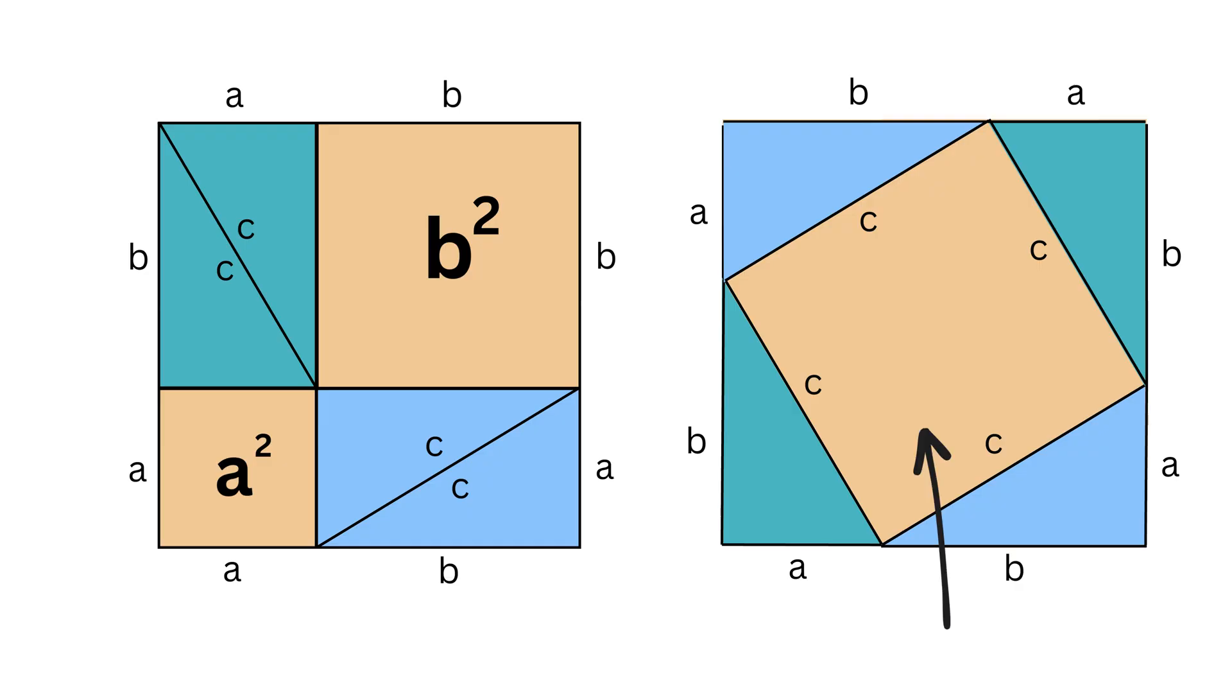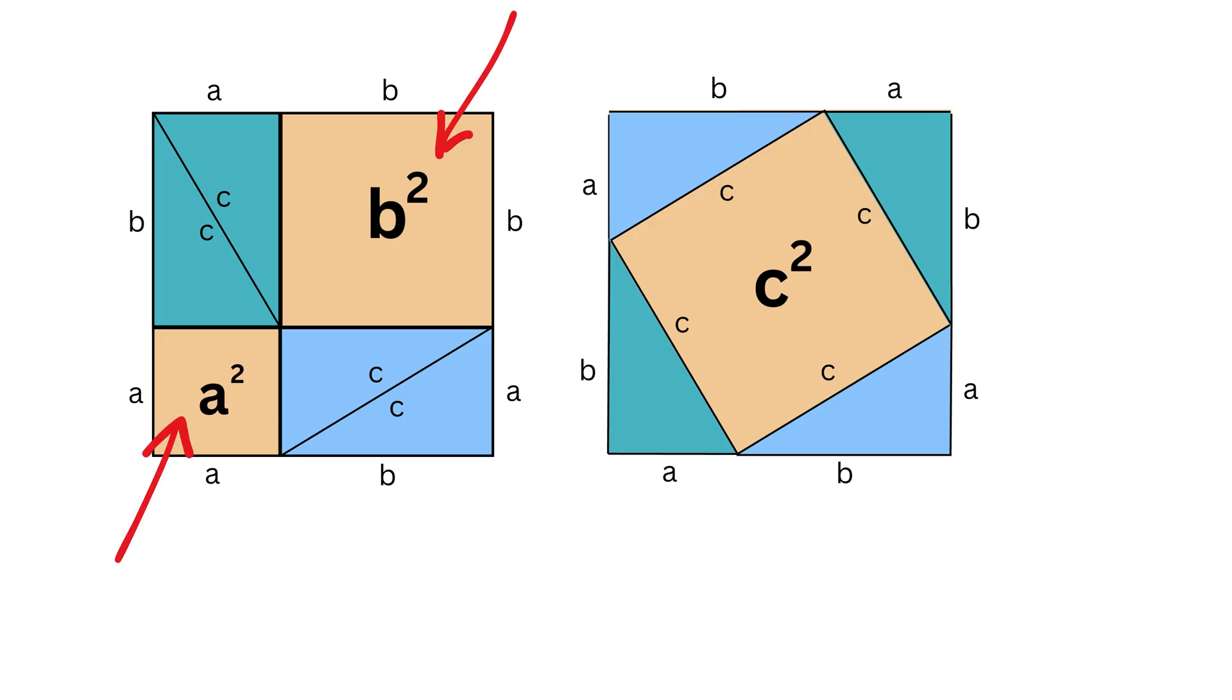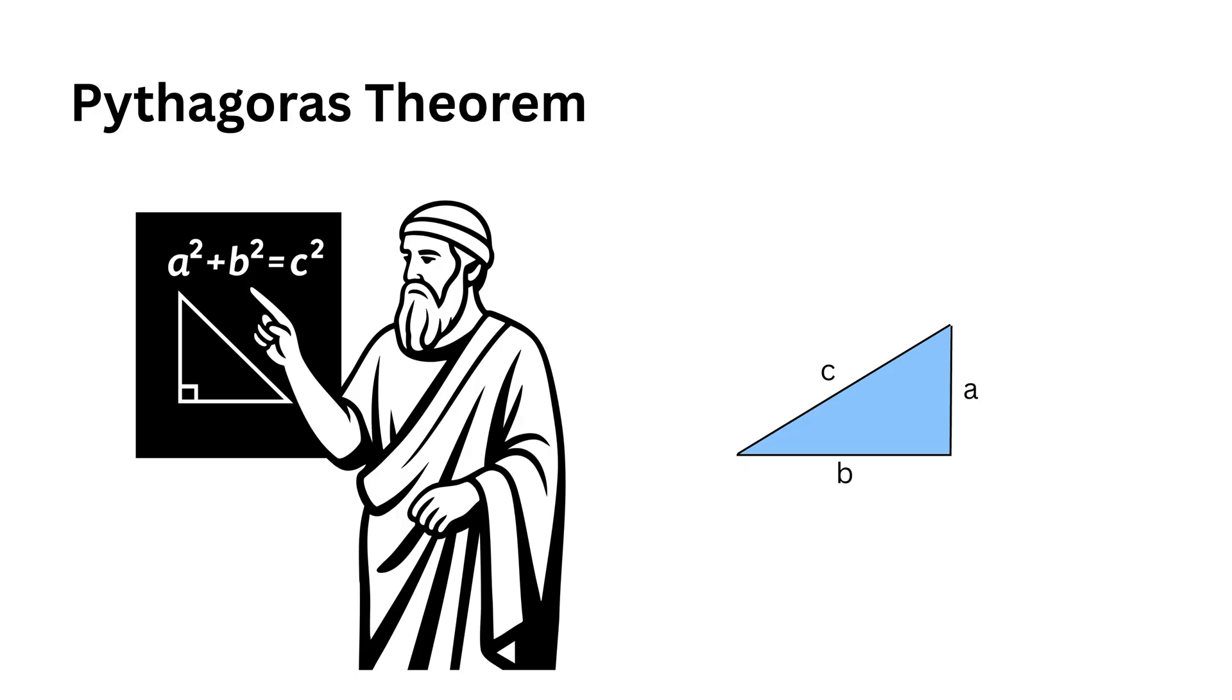What we have now formed is a square of side length c, and the rest of the four right triangles remain as it is. Its area is c squared, which means both these square areas, or a squared plus b squared, now equals the area of this big square, or c squared, and folks, this is the famous Pythagorean theorem.